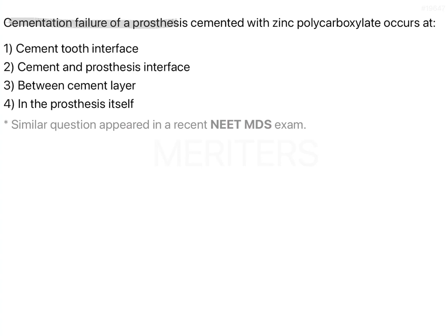Cementation failure of a prosthesis cemented with zinc polycarboxylate occurs at the cement-tooth interface, cement and prosthesis interface, between the cement layer, and in the prosthesis itself. Let us try to understand this question. Firstly, we are talking about zinc polycarboxylate cement — it is an excellent cement for cementation of final restorations because it bonds chemically to the tooth, but it is not so popular because of some obvious reasons.